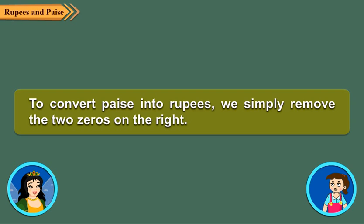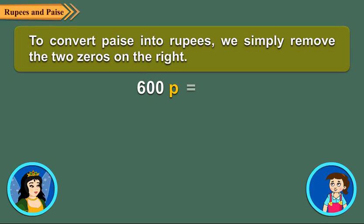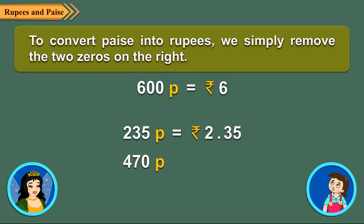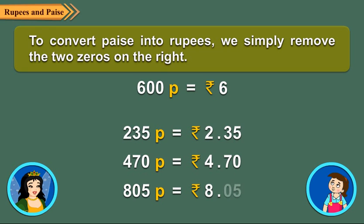To convert paise into rupees, we simply remove the 2 zeros on the right. For example, 600 paise will become 6 rupees. What to do when paise do not have 2 zeros on the right? In that case, we put a dot after the second digit from the right. Consider 235 paise — here we do not have zeros on the right, so we put a dot between 2 and 3, that is 2 digits from right. Similarly, 470 paise can be written as 4.70 rupees, and 805 paise can be written as 8.05 rupees.